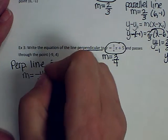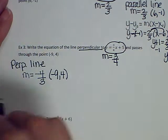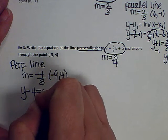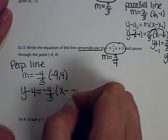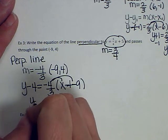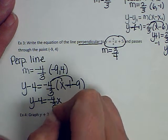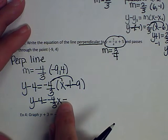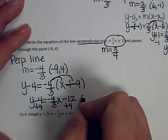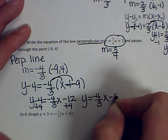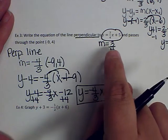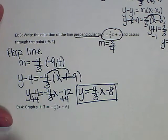My new slope is negative 4/3 and my point is (-9, 4). Using point-slope: y minus 4 equals negative 4/3 times (x minus negative 9). Minus a negative makes a plus, so distributing: y minus 4 equals negative 4/3 x, and negative 4/3 times positive 9 gives negative 12. Adding 4 to both sides: y equals negative 4/3 x minus 8. For perpendicular, find the slope, change the sign, flip it, and use point-slope.